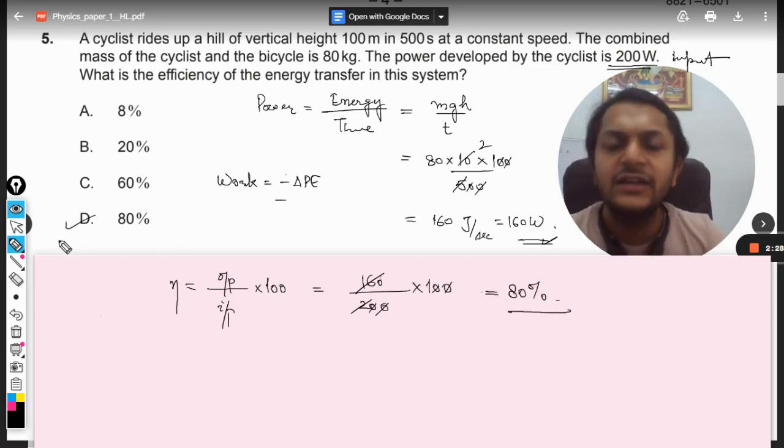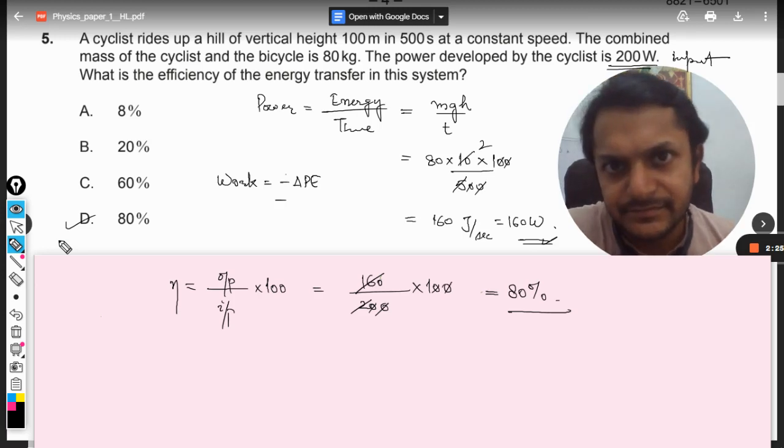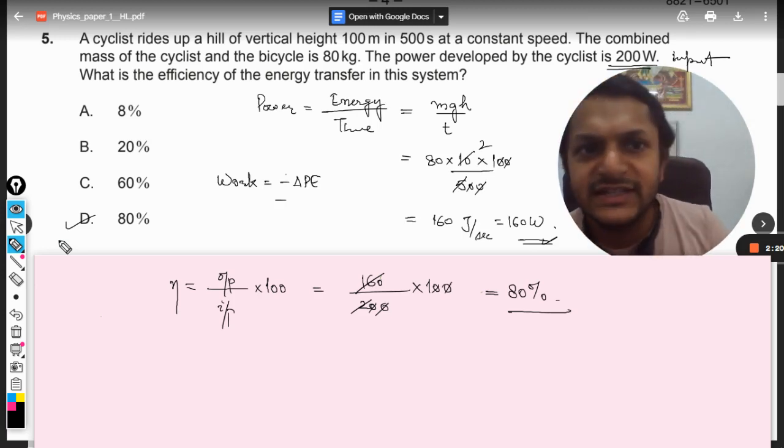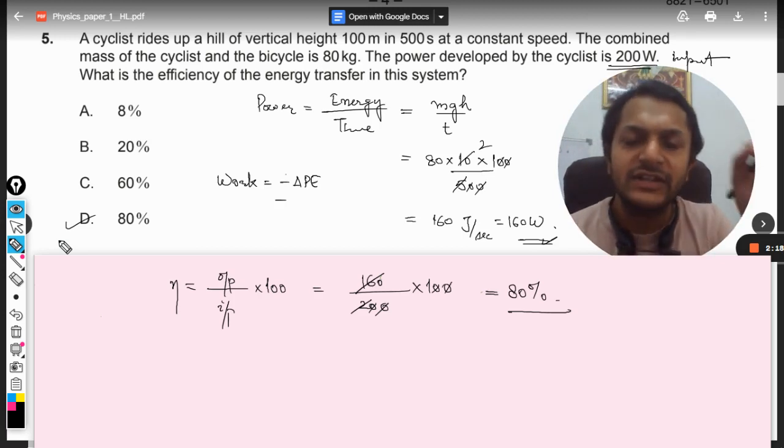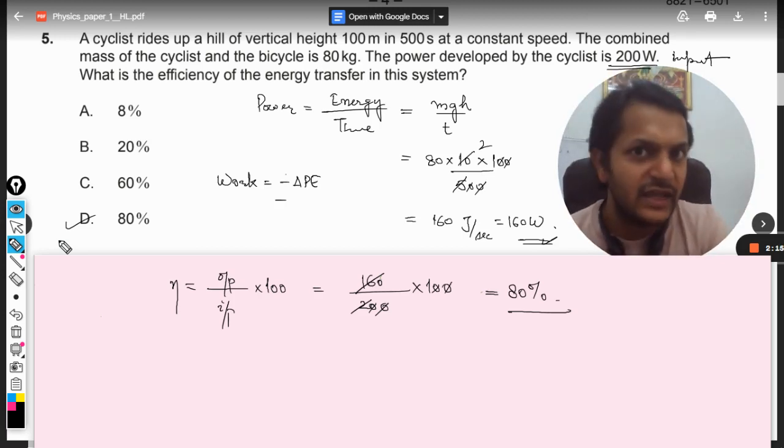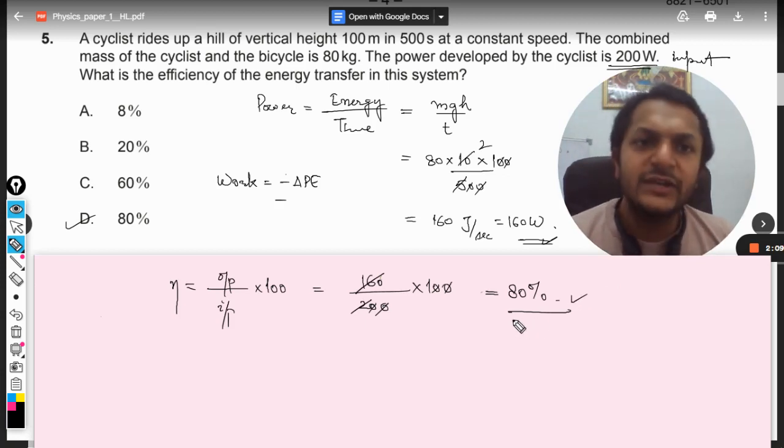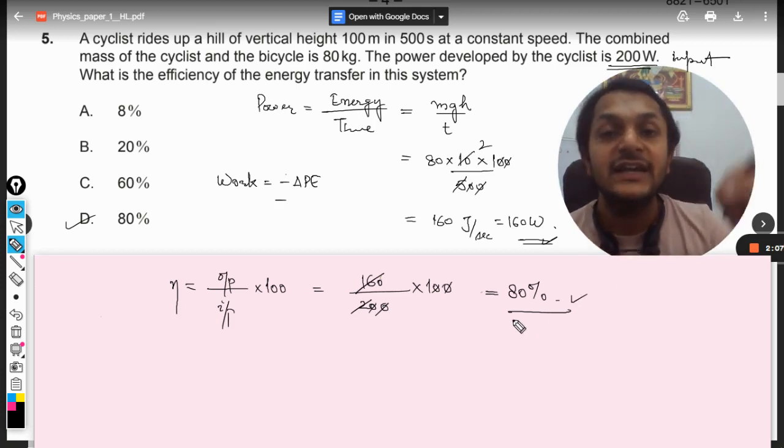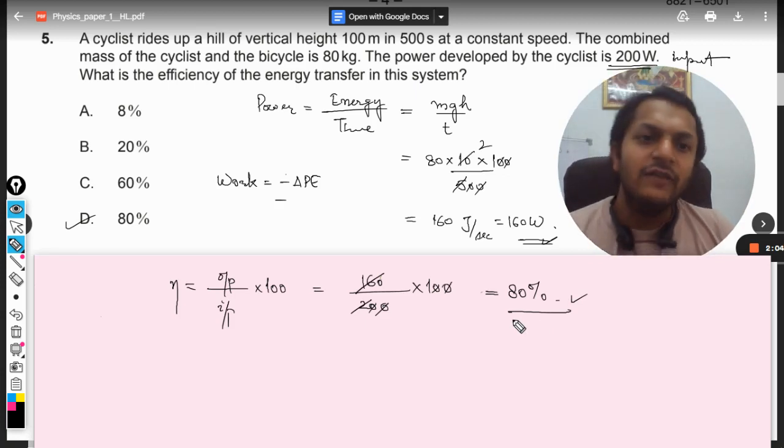So D is the correct answer. This is how we do it: we first of all find what is the power output, and we find what is the power input by the engine or by the cyclist. So the efficiency will be 80%, so 80% of the total power input is delivered as the power output.